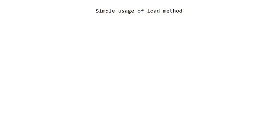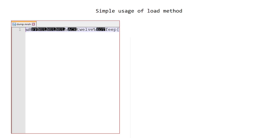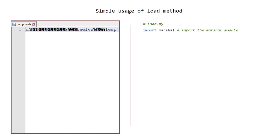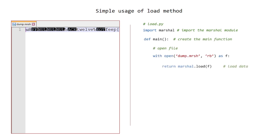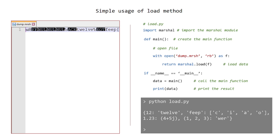Simple usage of the load method. Remember the dump.mrsh file from previous examples. Create a load.py file. Import the Marshall module. Create the main function. Open the file in read binary mode. Read data from the file. Call the main function and print the result. Run in terminal and see the results.